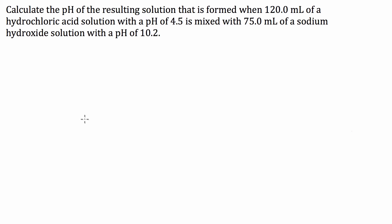We've been given a question here where it's asking us to calculate the pH of a resulting solution formed when we have hydrochloric acid with a pH of 4.5 mixed with sodium hydroxide that has a pH of 10.2. What we have here is a neutralisation reaction where hydrochloric acid in aqueous form plus sodium hydroxide in aqueous form neutralises to give sodium chloride and water.